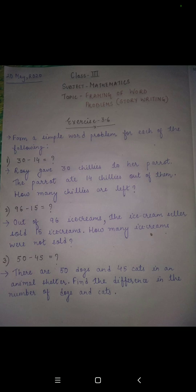Let's come to the second question, which says 96 minus 15. The word problem for this question is: out of 96 ice creams, the ice cream seller sold 15 ice creams. How many ice creams were not sold? Children, again, this word problem is on subtraction. Out of 96 ice creams, 15 ice creams were sold. To find the number of ice creams not sold, we will have to subtract the number of ice creams sold from the total ice creams.